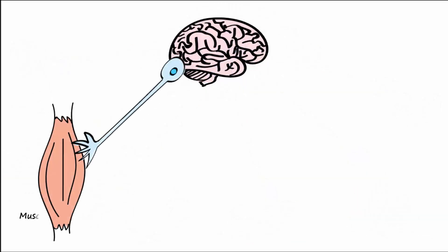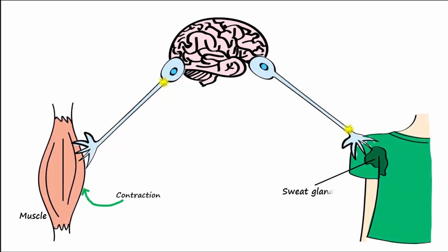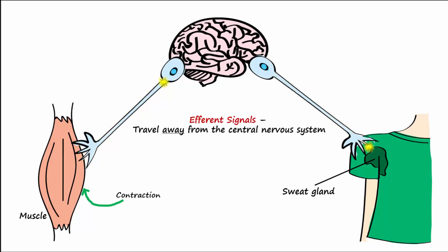Additionally, our thoughts and personalities are all possible because of the electrical capabilities of our brains. Electrical signals traveling from the brain to effectors such as muscles to cause contraction for movement, and to glands for secretion, are known as efferent signals. Hopefully you can see how important electrical signals transmitted along neurons are for both sensory and motor functions in the body. But what about neurons makes it possible for them to transmit electricity?